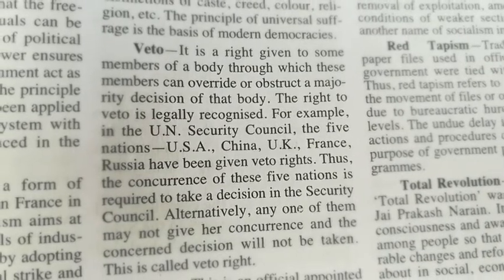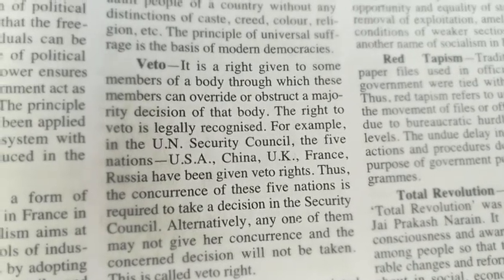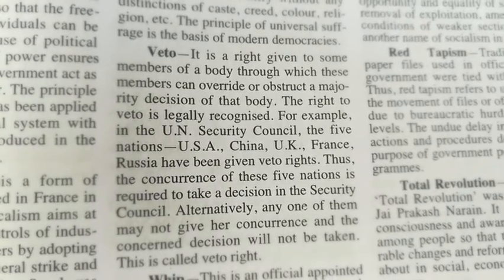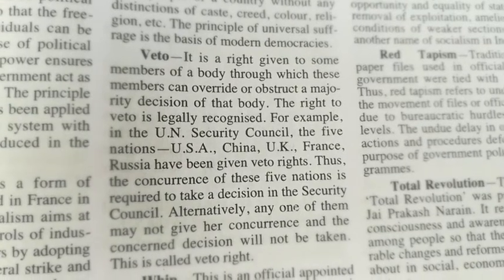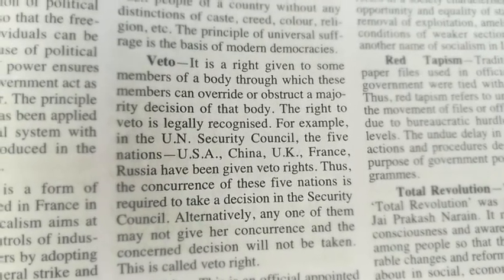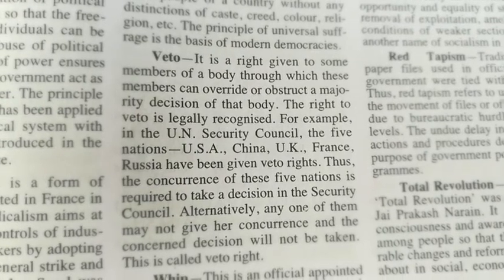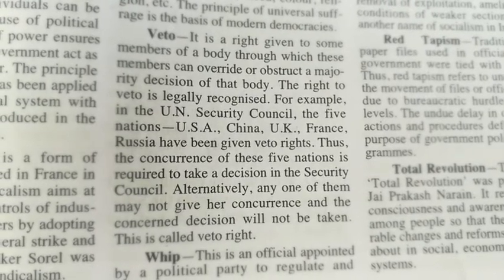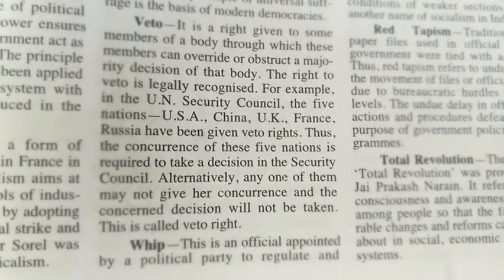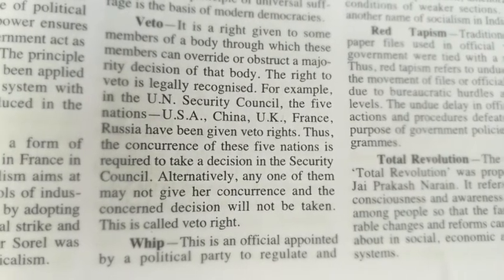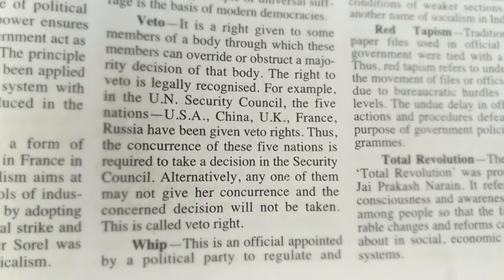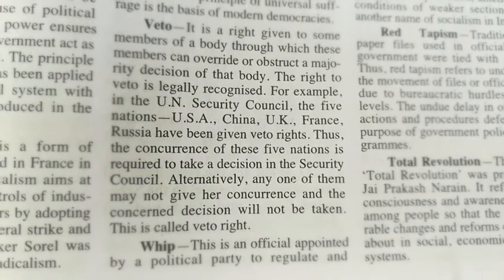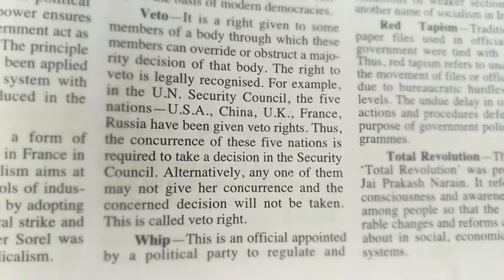Class 12th, subject political science. Topic: Veto Power. Veto power is a right given to some members of a body through which these members can override or obstruct a majority decision of that body. The right to veto is legally recognized. For example, in the UN Security Council, the five nations — USA, China, UK, France, Russia — have been given veto rights. The concurrence of these five nations is required to take a decision in the Security Council. Alternatively, any one of them may not give their concurrence and the concerned decision will not be taken.